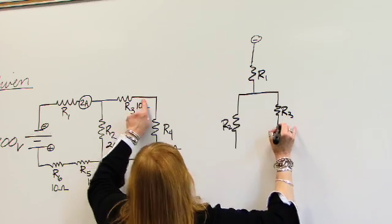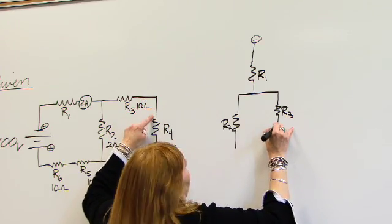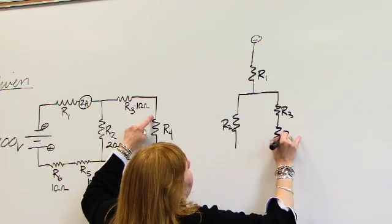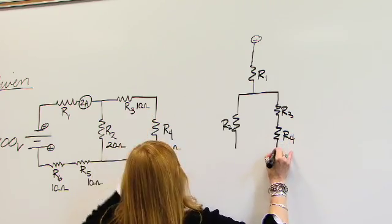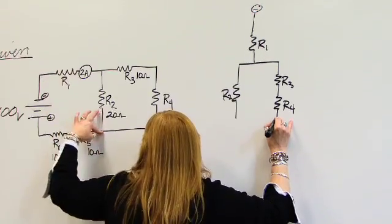And then after R3, the current will flow down the wire and hit R4. And at the bottom end of R4, this wire travels back and hooks up with the bottom end of R2.